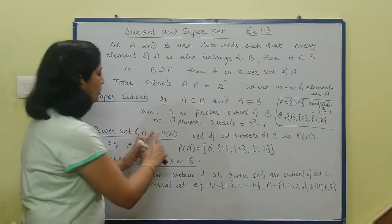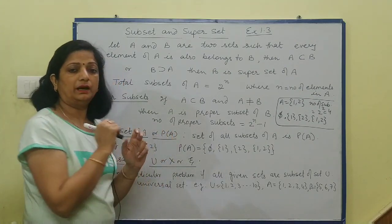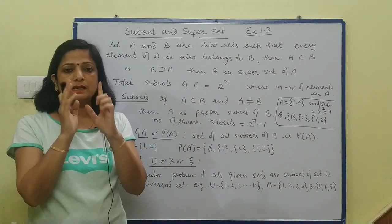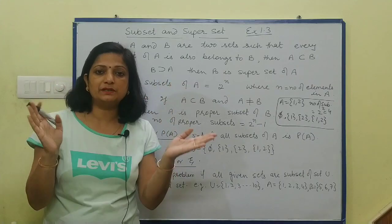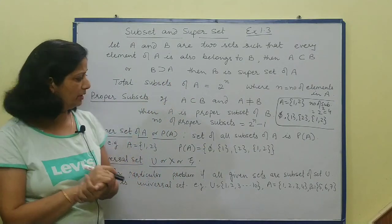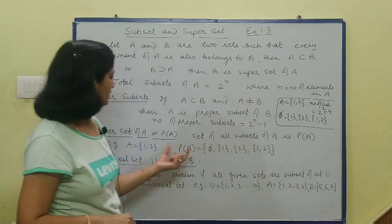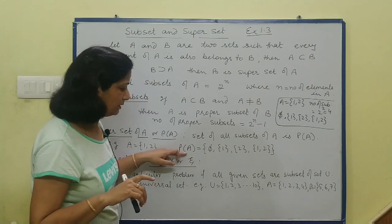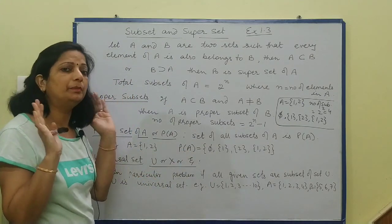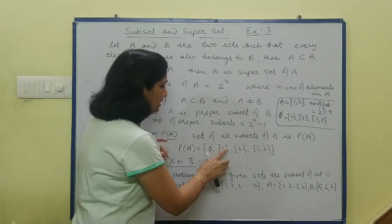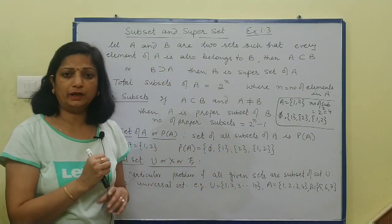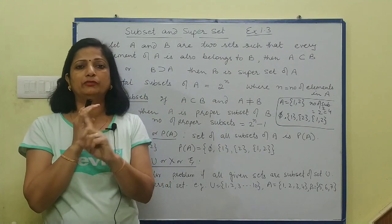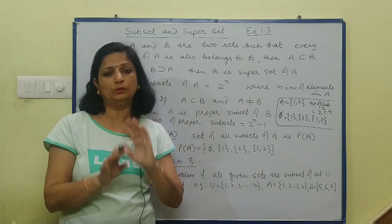Power set of A — notation है P(A). Power set, जैसे नाम से ही आपको लग रहा है — set of all subsets of A is known as power set of A. For example, A set has elements 1 and 2, then power set P(A) = {empty, {1}, {2}, {1,2}}. तो power set के जो elements होंगे वो subset की form में होंगे, single element की form में नहीं।